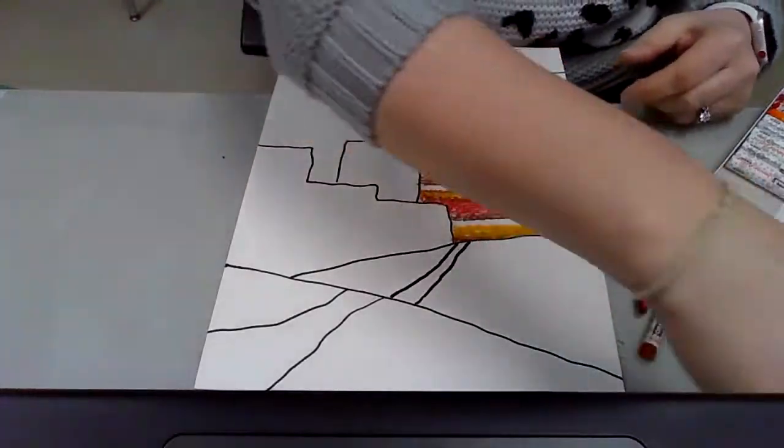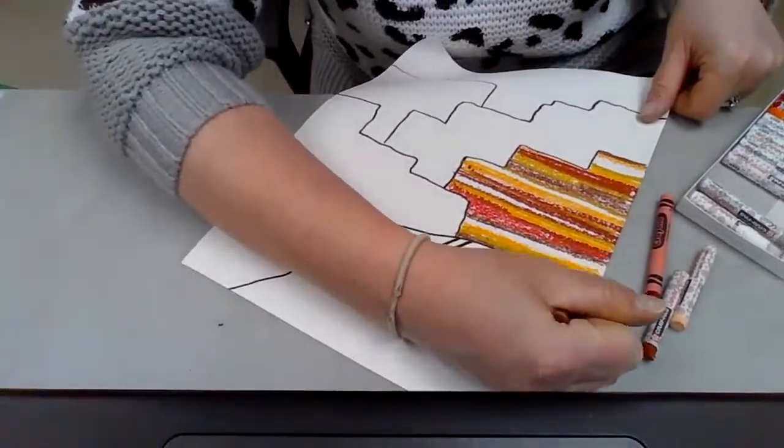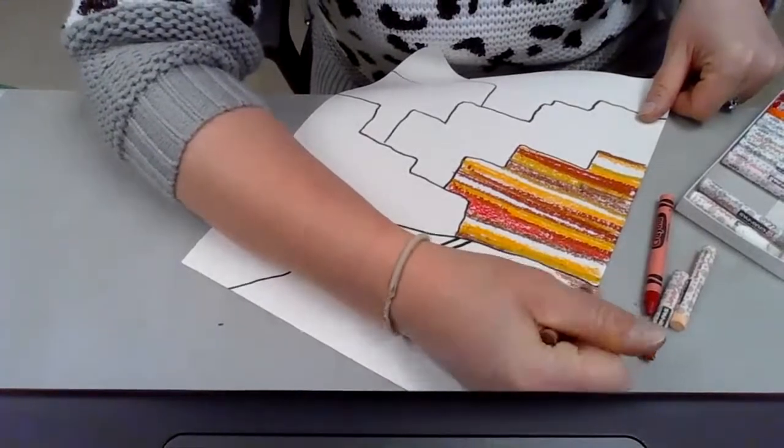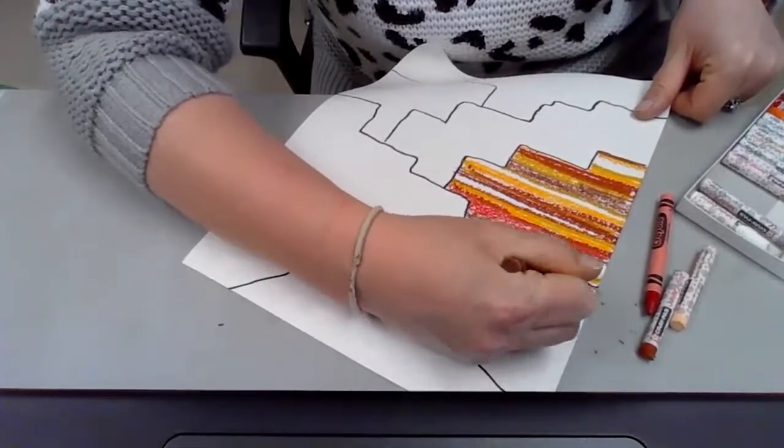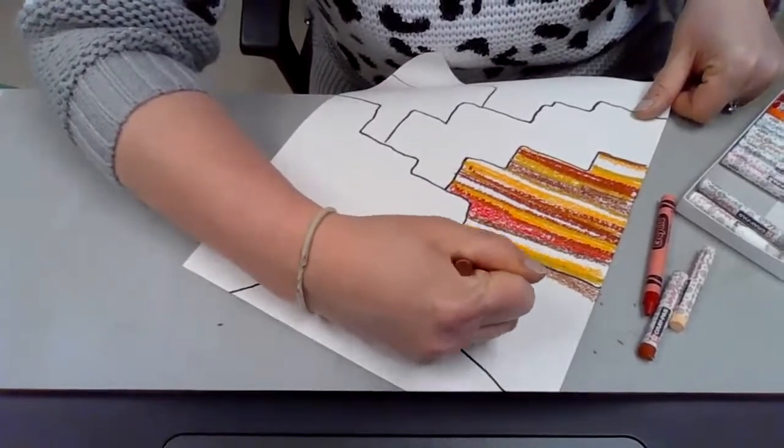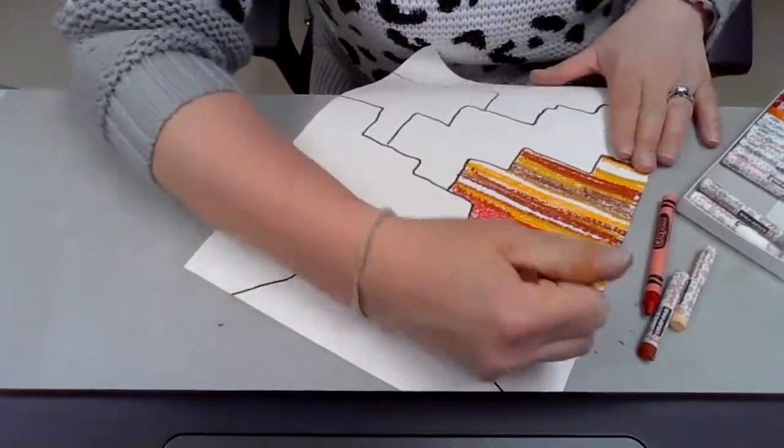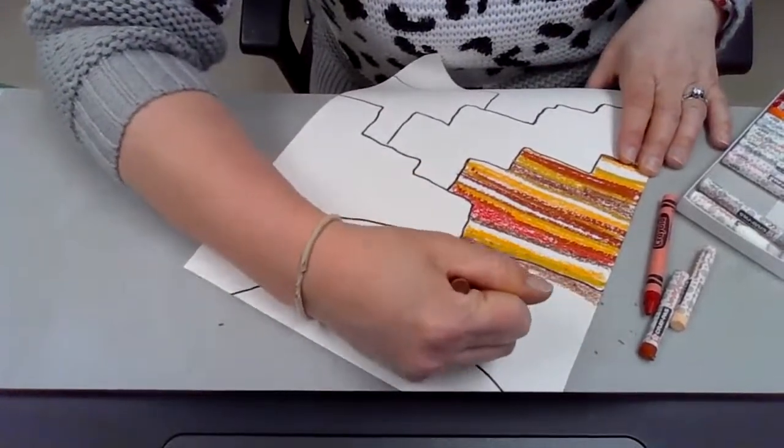So when you're ready to move on to the land area, there's not a lot of grass and greenery. It is more like a desert landscape. So when I go to color this, I am sticking with my natural colors, my neutral colors.